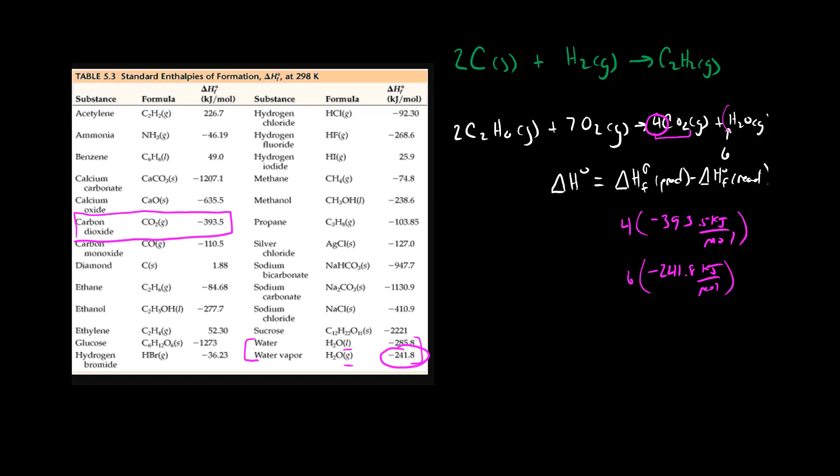The idea is that these energies are for one molecule. Since we have six waters that are formed we have to use the formation energy of six of them. So if we add these up together this is going to give us the total enthalpy of formation of our products.